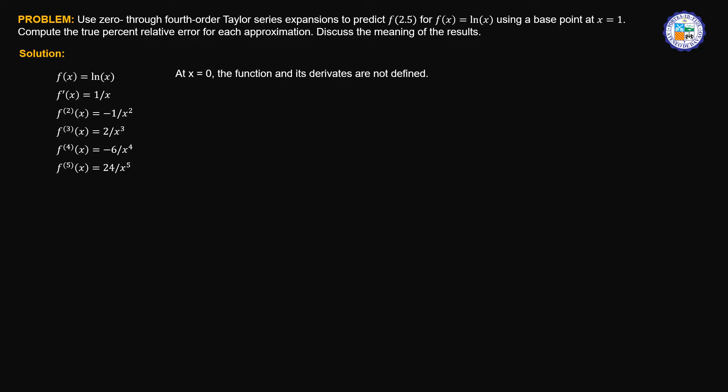If we use x equals 0 as our base point, the function and its derivatives are not defined because the x variable is located in the denominator. Therefore, if we substitute x equals 0, the function becomes indeterminate or undefined. Therefore, we will use another base point value such that the function and its derivatives are defined — we will use x equals 1. The function value at that point is equal to 0 because ln of 1 equals 0.